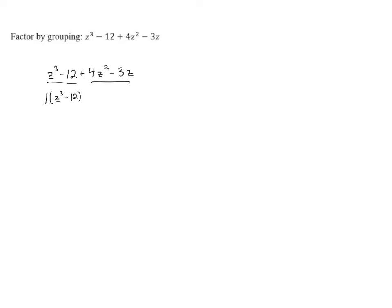Now let's look at the second group. We've got 4z² - 3z. Both of those contain a z, so I'm going to pull out a z. When I do, the leftovers are going to be 4z - 3. Now if we look at the things in parentheses, we have z³ - 12 and we have 4z - 3.